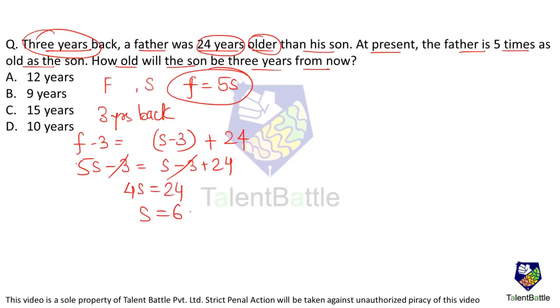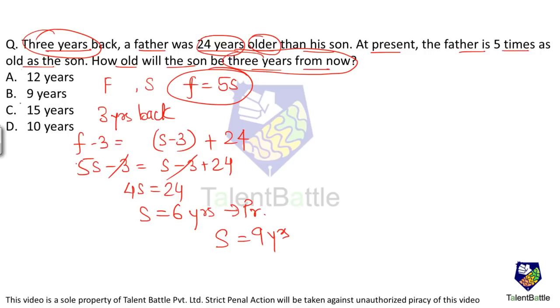Therefore, the son's present age comes out to be 6 years. The question asks how old will the son be 3 years from now — that is 6 + 3 = 9 years. So the answer is option B.